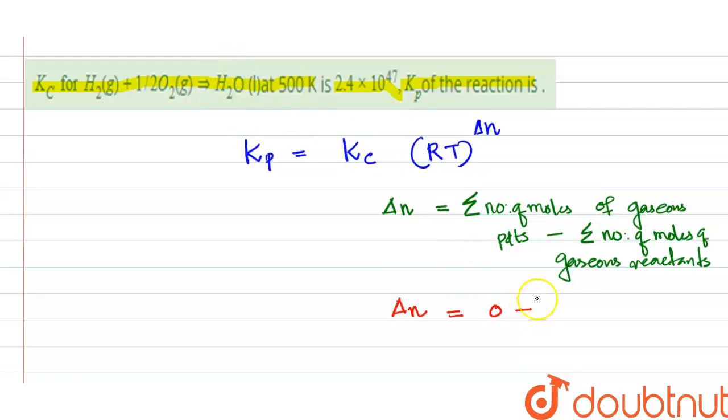There are no gaseous products, so that is zero. Zero minus the total number of moles of gaseous reactants—that is one plus half, which is 1.5. Zero minus 1.5 equals -1.5.